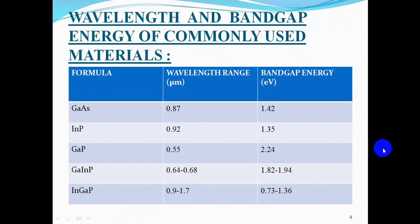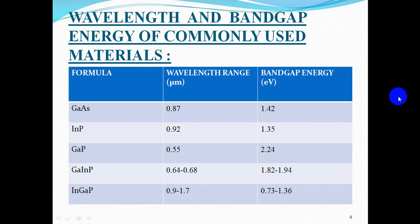Here is the table of wavelength and bandgap energy of commonly used materials like gallium arsenide, indium phosphide, gallium phosphide, gallium indium phosphide, and indium gallium phosphide.